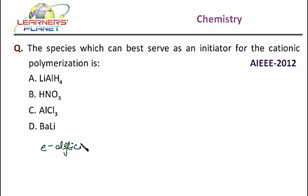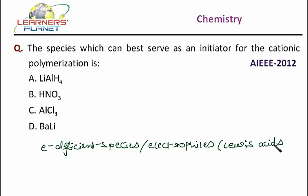Electron deficient species or what are they also called as? Electrophiles, that is electron loving agents or the Lewis acids. Or it can be any cation. So any of these can initiate a cationic polymerization.